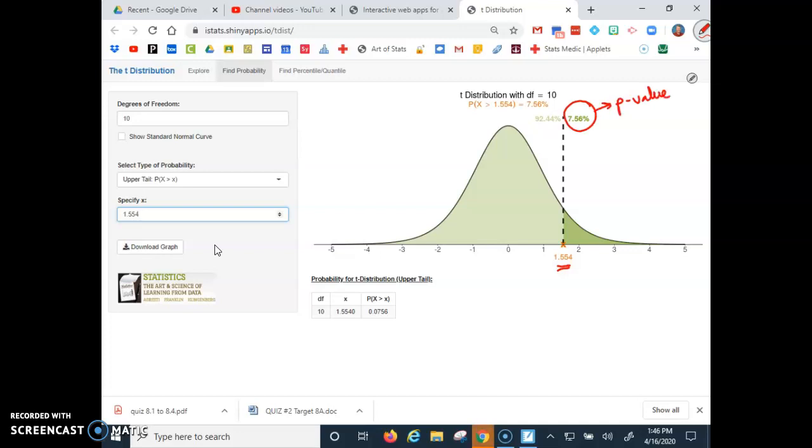This right here matches up with our test statistic, but right here is our p-value as a percent. We need to change over to a decimal—7.56 percent. Just take this and move it two places to the left. Our p-value is actually 0.0756, which basically means that the probability of getting a sample more extreme than ours would be about 7 to 8 out of 100. That doesn't sound like a lot, but how does that compare to alpha?